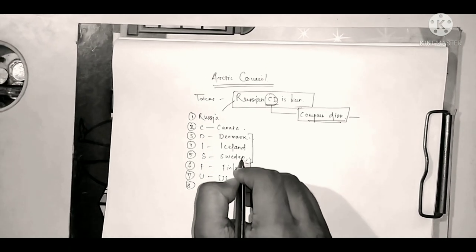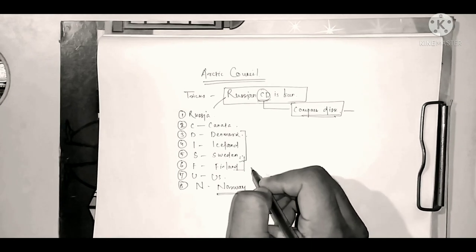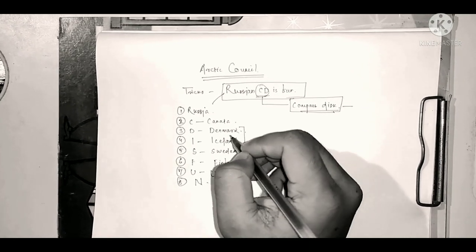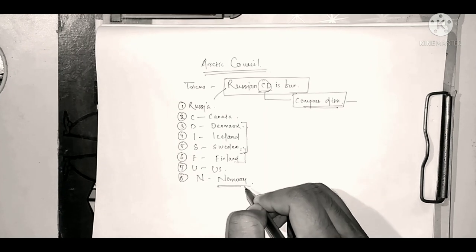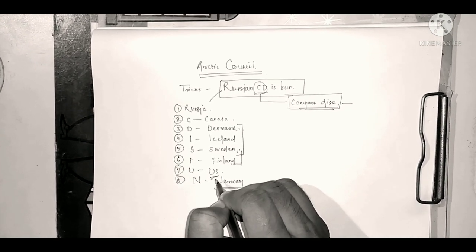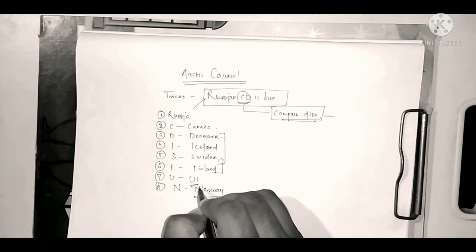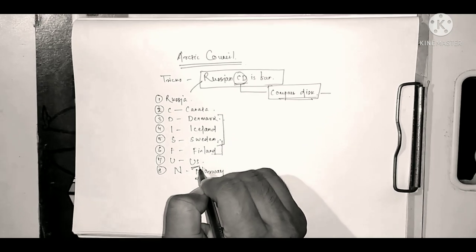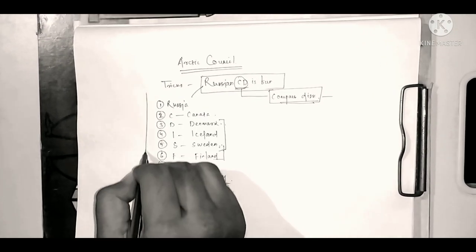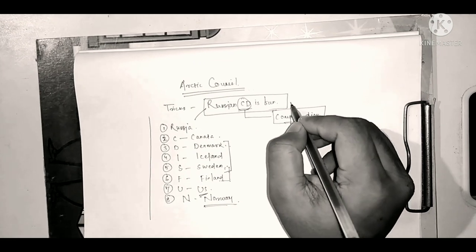So Norway, Finland, Sweden and Denmark, these are the northern European countries which are also called Scandinavian countries. So you can remember these four countries easily and then US, you know it is a... I mean, confirm that US would be there. So you can remember it like this from the logic or you can remember it from the sentence itself.